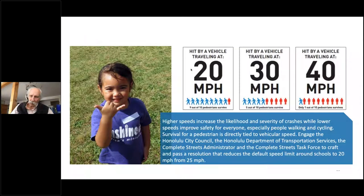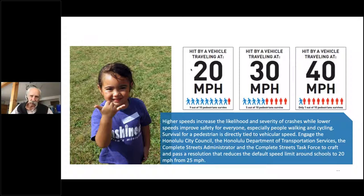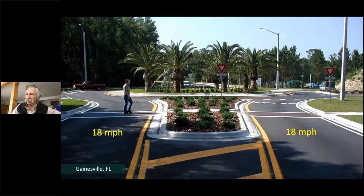Speed is what we're really trying to curtail. There's no reason in urban spaces to honor speed. At 20 miles an hour, 9 out of 10 pedestrians will survive. But once you get up to 40, only 1 out of about 8 will survive. Everything is to bring speeds down — the entry speed and the exit speed in a properly designed roundabout is 18 miles an hour.